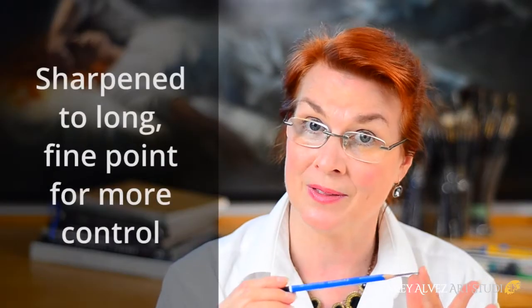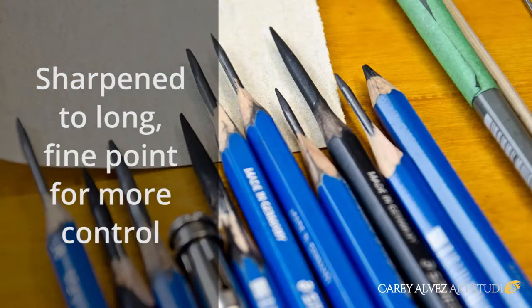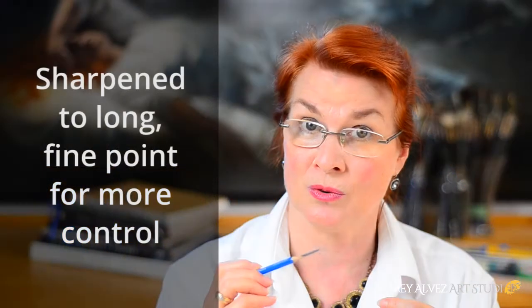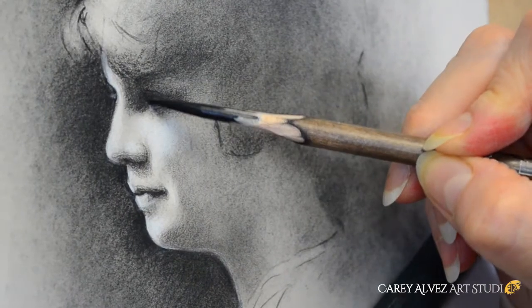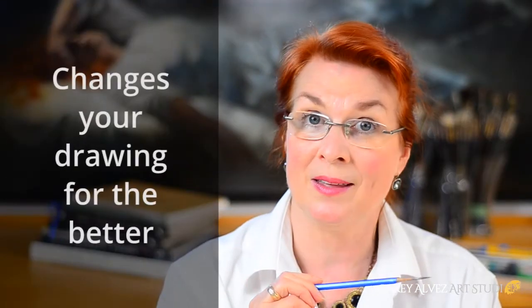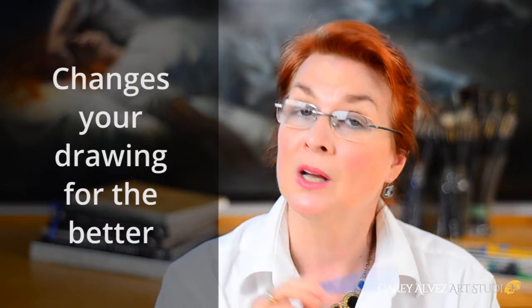So you'll notice that my pencils are sharpened differently. I have them sharpened to a very long fine point, and there's a reason for that. First of all, having them at a very fine point like that actually gives you a lot more control over the end result. You can get a lot more detail, you can get in there and do very fine work that you couldn't with a regular sharpened pencil. You also don't have to sharpen your pencil as often, but actually sharpening your pencil like this changes the way that you draw, and for the better. So let's get started.